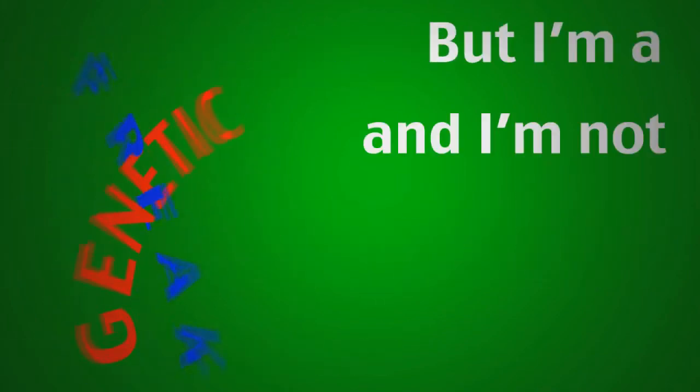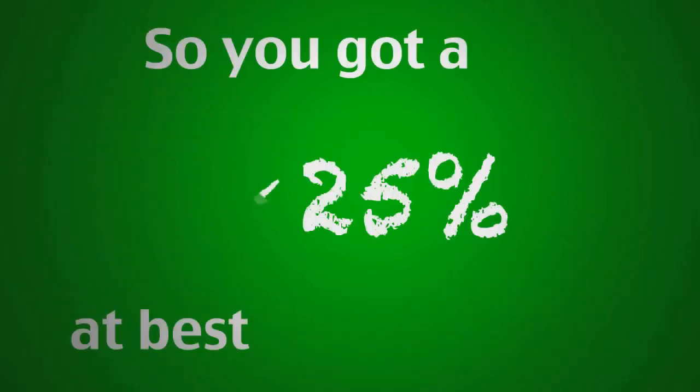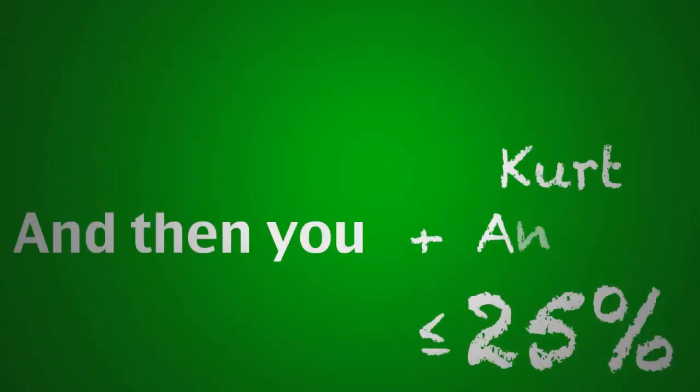See, normally if you go one-on-one with another wrestler, you got a 50-50 chance of winning. But I'm a genetic freak and I'm not normal, so you got a 25% at best at beat me.